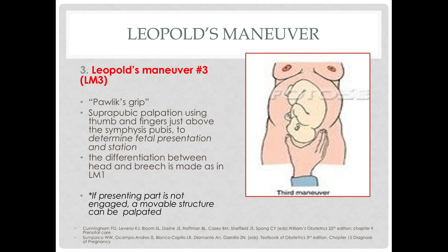Leopold's Maneuver 3 is the Pawlik's grip — suprapubic palpation using the thumb and fingers just above the symphysis pubis. The objective is to determine fetal presentation and station, specifically which part of the fetus is nearest the birth canal. If the presenting part is not engaged, a movable structure can be palpated. However, if the fetus is already engaged, it will be hard to perform Leopold's Maneuver 3.